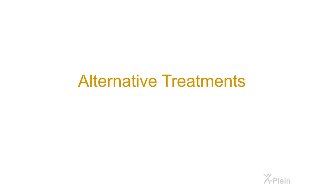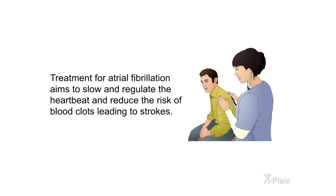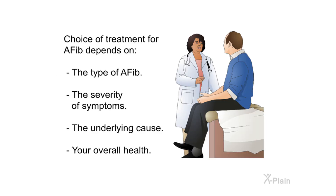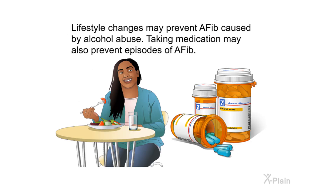Treatment for atrial fibrillation aims to slow and regulate the heartbeat and reduce the risk of blood clots leading to strokes. The choice of treatment depends on the type of AFib, the severity of symptoms, the underlying cause, and your overall health. Lifestyle changes may prevent AFib caused by alcohol abuse, and taking medication may also prevent episodes of AFib.